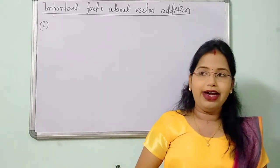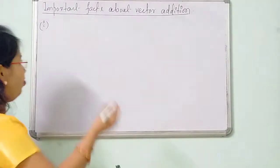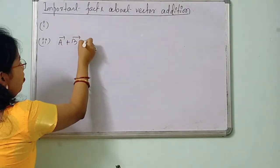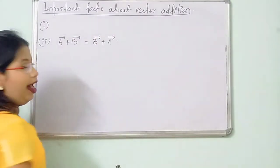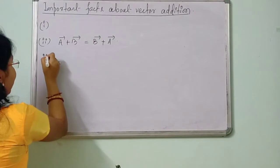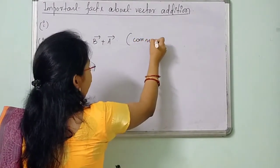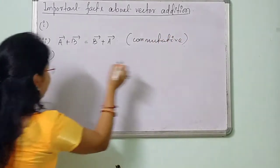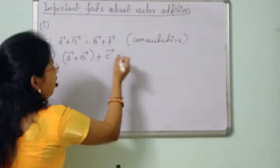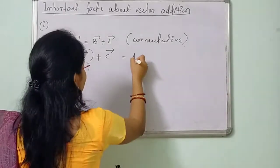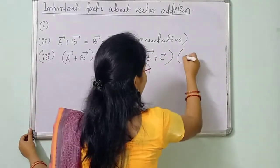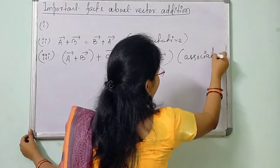The second point is that vector addition is always commutative — meaning A vector plus B vector equals B vector plus A vector. You can take any example and verify this. Next, vector addition is associative — that is, A vector plus (B vector plus C vector) equals (A vector plus B vector) plus C vector. This is known as the associative law of vector addition.